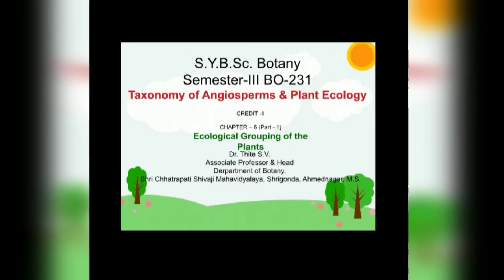The first type is littoral swamp forest or mangroves. These forests extensively occur in all tropical seashores and estuaries, especially on flat muddy shores where the water is relatively calm, as in lagoons, inlets, estuaries, etc., where soil is flooded with water either permanently or at the time of high tides. The littoral swamp forest forms characteristic vegetation known as the mangrove formation in tropical and subtropical areas. For example, Rhizophora.